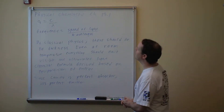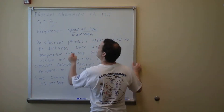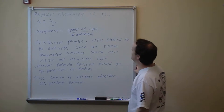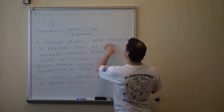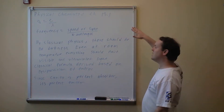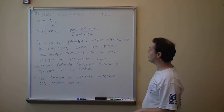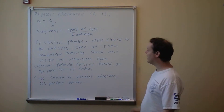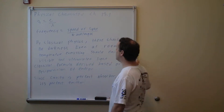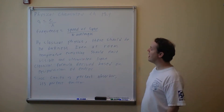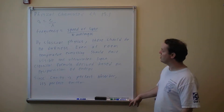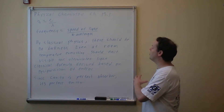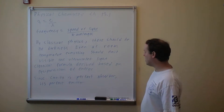Continuing on Physical Chemistry, Chapter 18, Section 1. We have the formula ν = c/λ, where nu is frequency, c is the speed of light, and lambda is wavelength. The classical formula was derived using the equipartition of energy — energy would be stored equally among all degrees of freedom. Because of this, even at room temperature, having a dark black room should be impossible: everything should be glowing with visible and ultraviolet light, which we know is not the case. The classical formula assumed energy is continuous and equally distributed, but we're about to show why that's wrong. A black body, being a perfect absorber, should also be a perfect emitter of radiation.